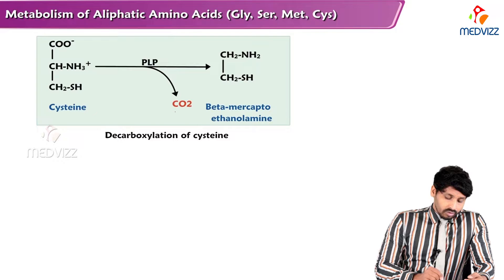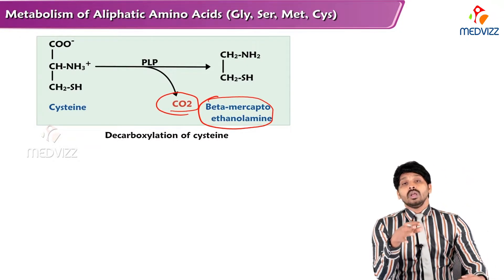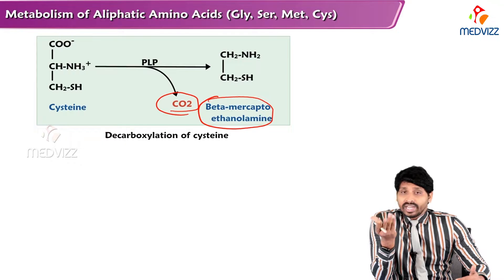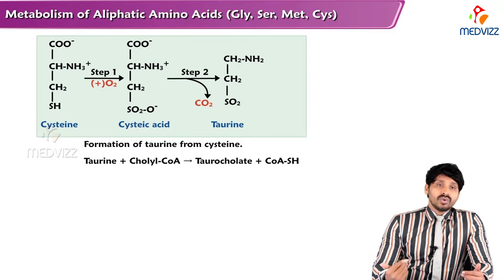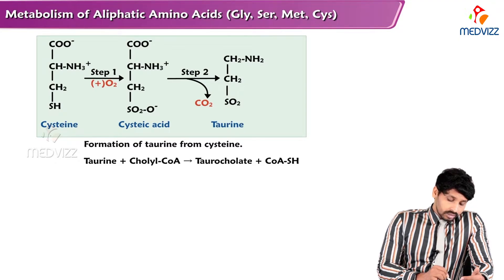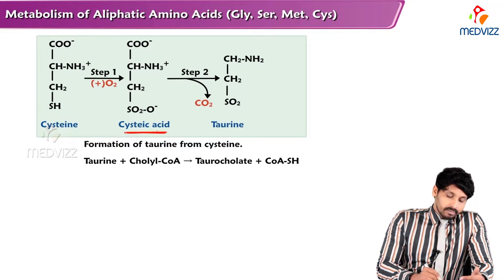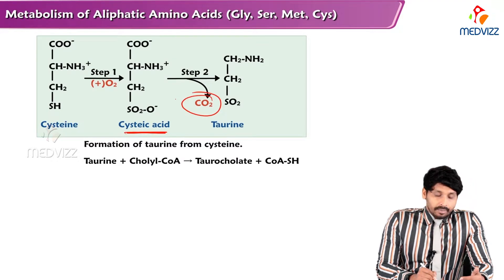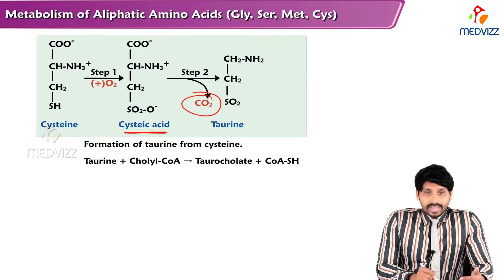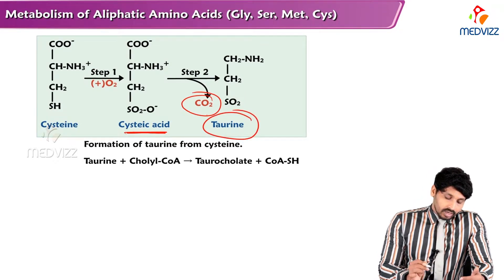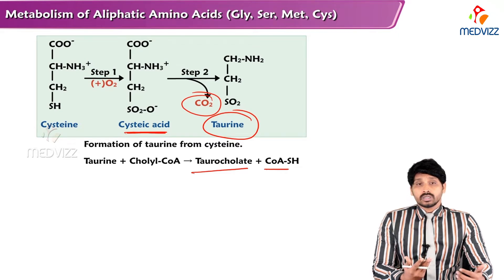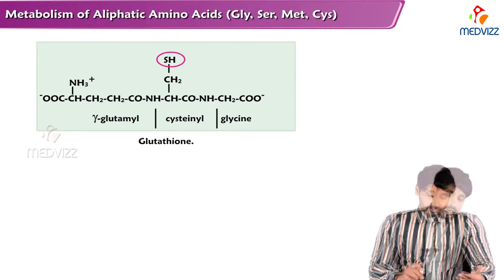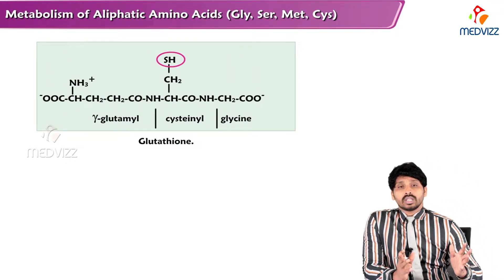Looking at decarboxylation of cysteine step by step: when you remove the carboxylic group, it forms beta-mercaptoethanolamine, which is useful in making pantoic acid. Cysteine also forms taurine — by adding oxygen to cysteine it forms cysteic acid, and by removing carbon dioxide through a decarboxylation reaction it forms taurine.